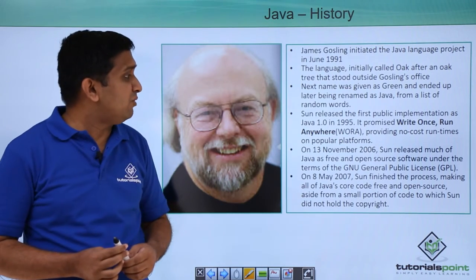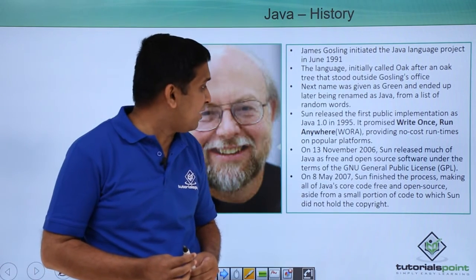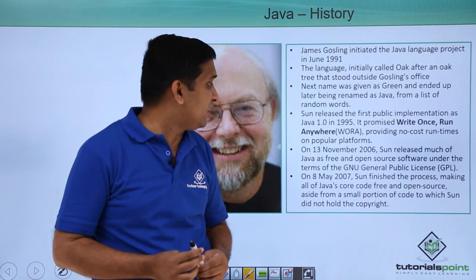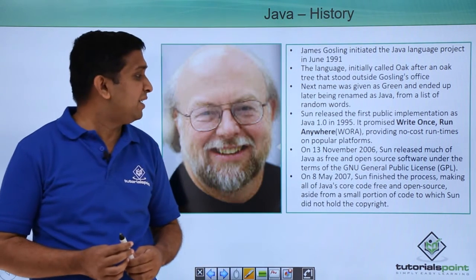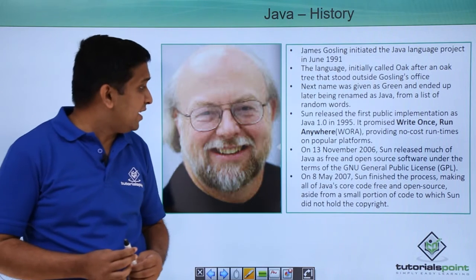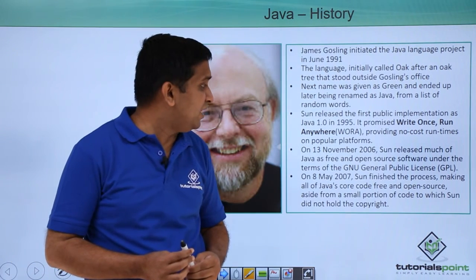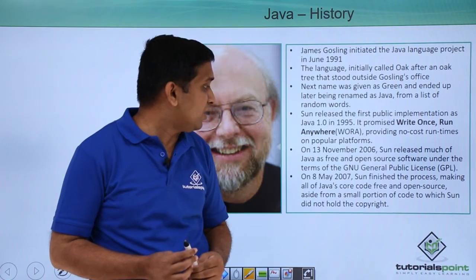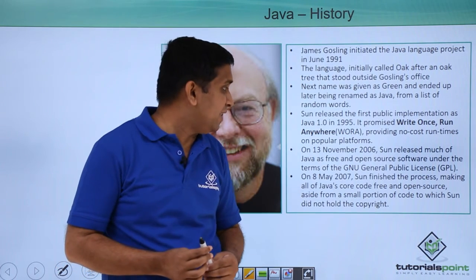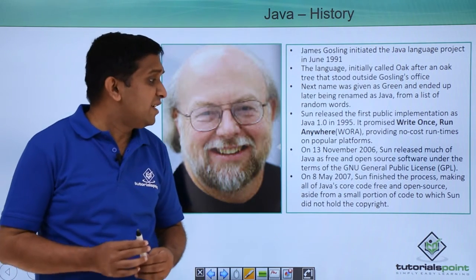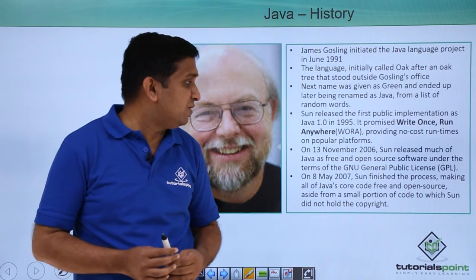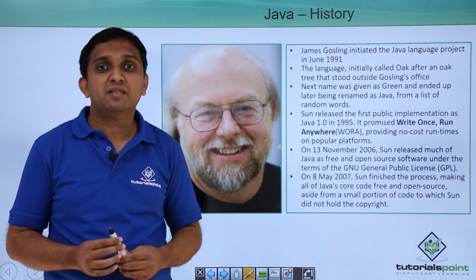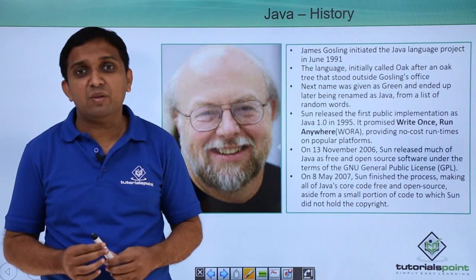In November 2006, Sun released much of Java as free and open source software under the terms of the GNU General Public License. In May 2007, Sun finished the process of making all the Java core code free and open source, aside from a small part of the code to which Sun did not hold the copyright. This was regarding the history of Java.